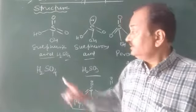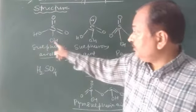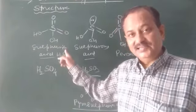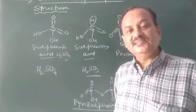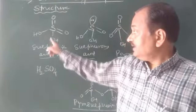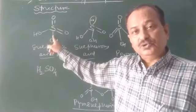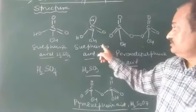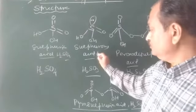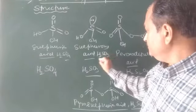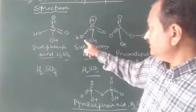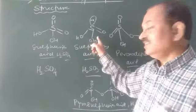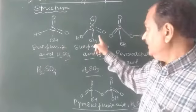An important point to note is that the OH groups are not basic in character — in fact, they are acidic. Sulfuric acid is a dibasic acid. The S–O bond is very strong, so only H⁺ ions can be released. Coming to sulfurous acid, H₂SO₃, it has a lone pair of electrons, two OH groups, and is a tetrahedral molecule.